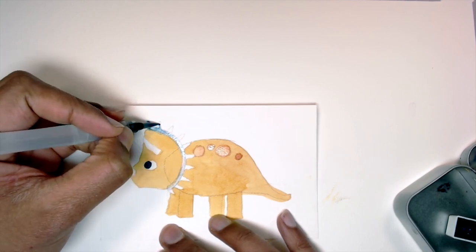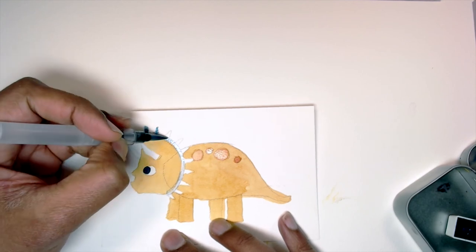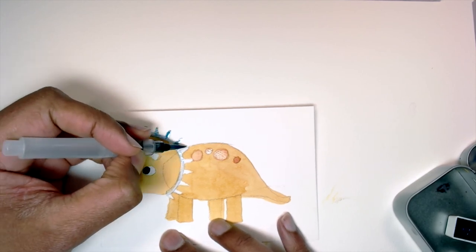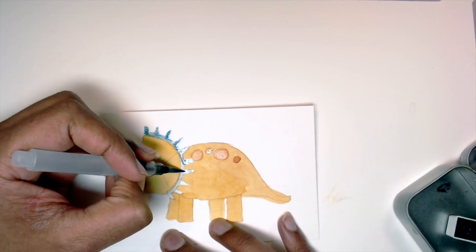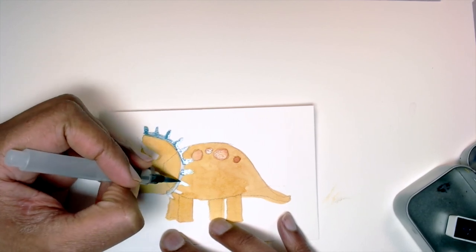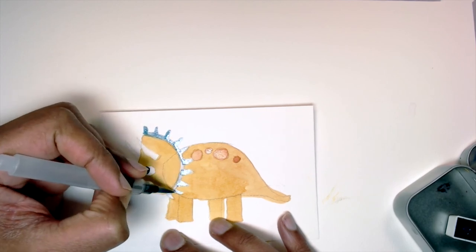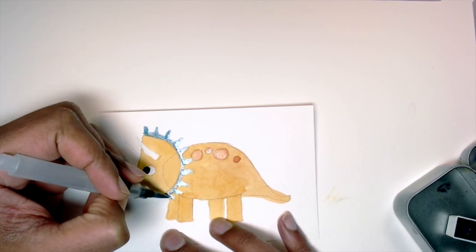So I'll do the frill and the spikes, and I'm just going to use my paper towel again to dab it down just so it's not this dark.